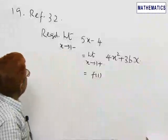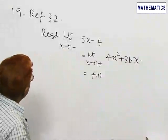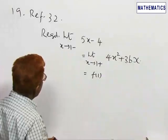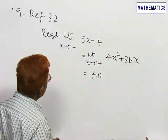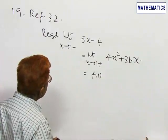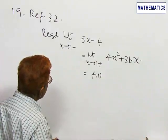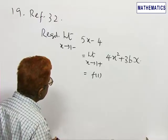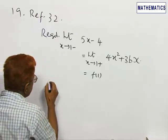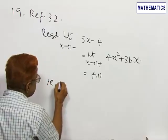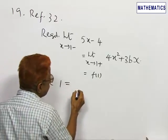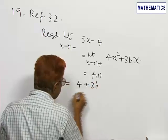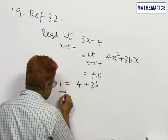The next problem is refer problem number 32. What is required is: limit extending to 1 of (5x - 4) is equal to limit extending to 1 of (4x² + 3bx), which is equal to f(1). That is, 1 is equal to 4 + 3b.